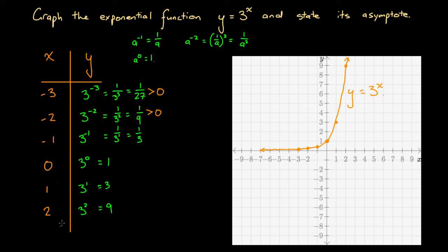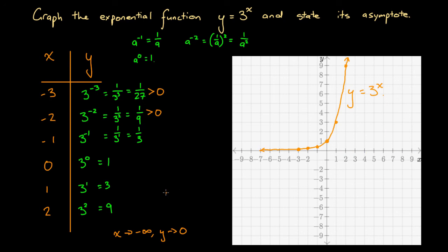We can see that decreasing values of x, particularly as x gets negative and large, are associated with y values that are very small but always positive. We have 1 over 3 for x equals minus 1, then 1 over 9 for x equals minus 2, which is smaller, and 1 over 27 for x equals minus 3, which is smaller again. If we continue with large negative x values, y values get closer and closer to 0 but never quite reach 0. So as x goes to minus infinity, y goes to 0 but never reaches it. Consequently, the asymptote is the line y equals 0.